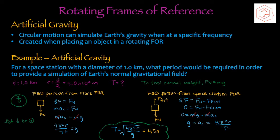For a spaceship with a diameter of 1 km, what period is required to provide a simulation of Earth's normal gravitational field? We know diameter, and radius is half of diameter — 1000 m ÷ 2 = 5.0 × 10² m. We're solving for period. To feel normal weight, fn must equal mg. This can be analyzed from either an external frame of reference or the moving frame of reference.